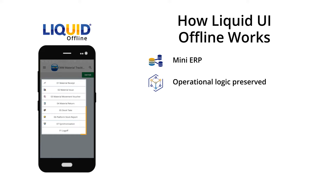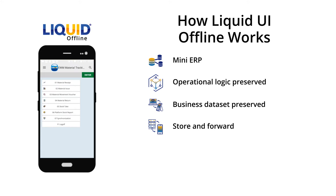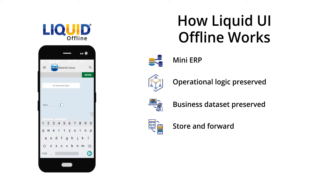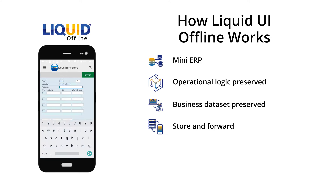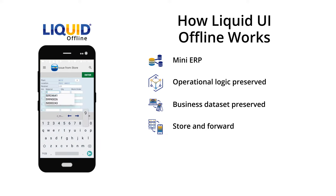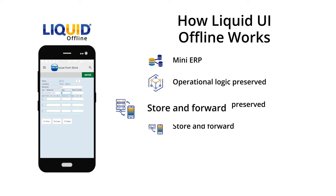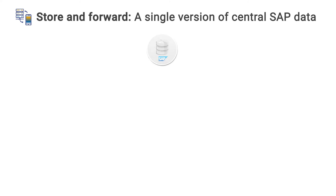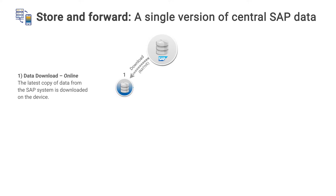So how does it work? Liquid UI's offline technology has the power to miniaturize any SAP ERP and put it securely on an Android device. Core SAP operational logic and business datasets are preserved. Using a simple push-button interface, the device downloads all applicable data for that day's work.